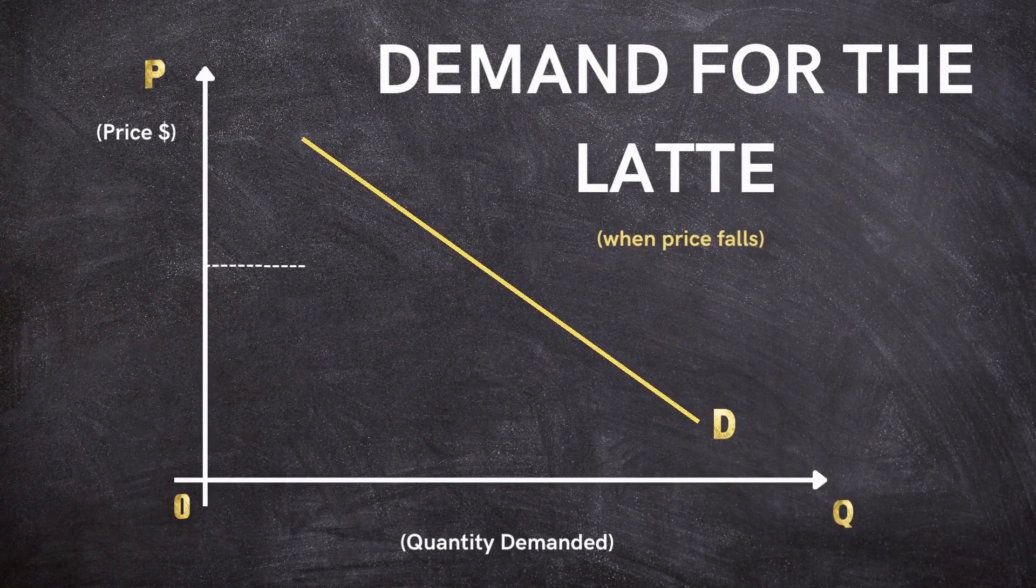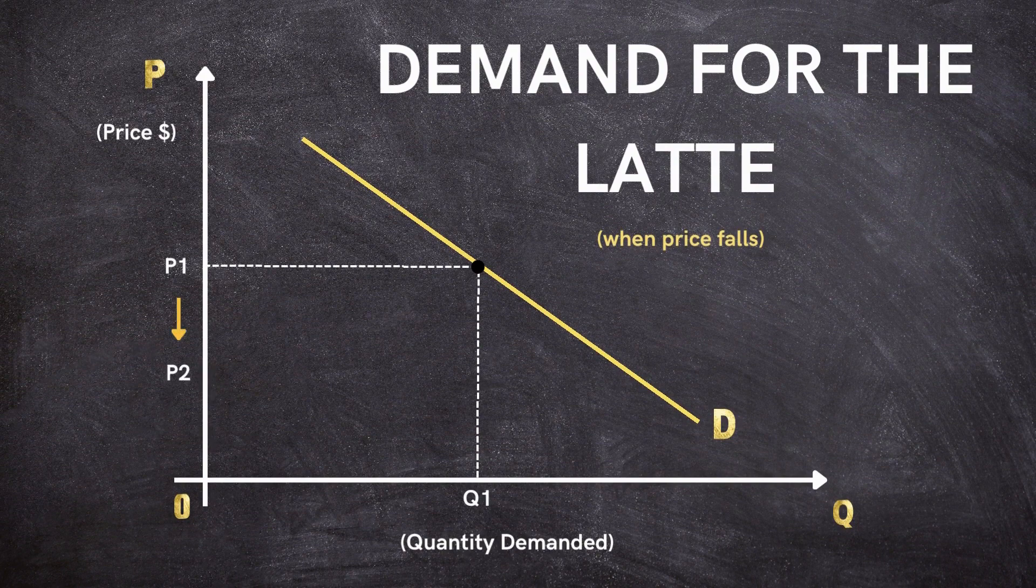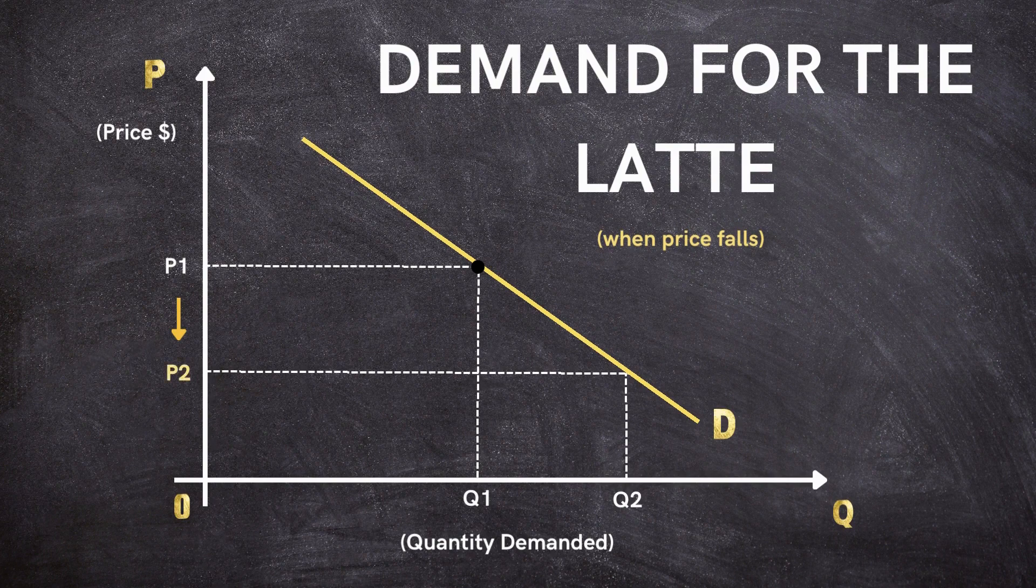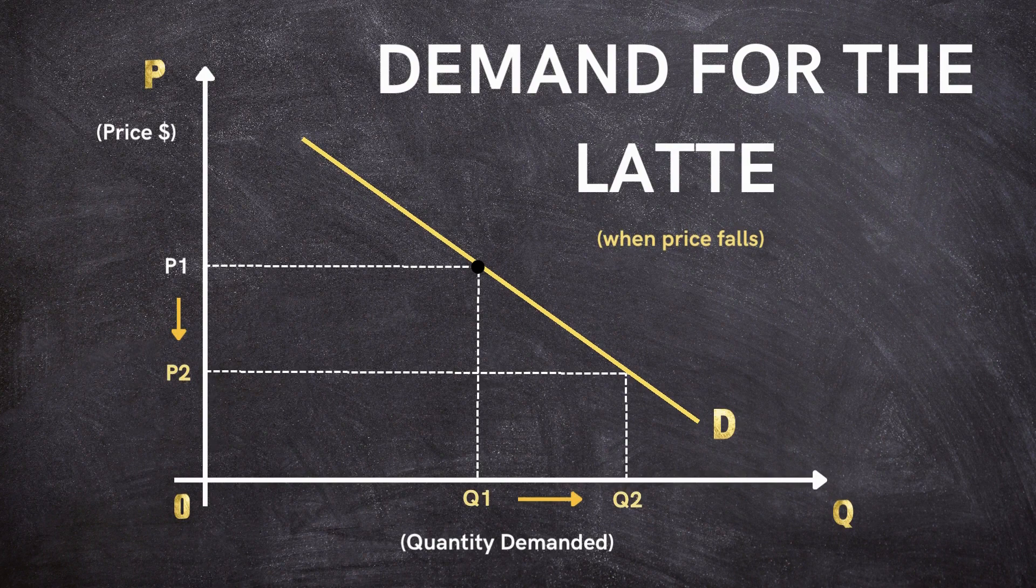But what if that same latte was suddenly on a limited-time discount? Your excitement might drive you to buy more than usual. Here, the lower price, P2, has enticed you to increase your quantity demanded from Q1 to Q2, causing another movement along the demand curve.